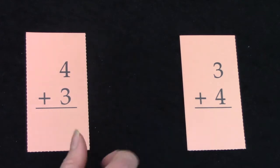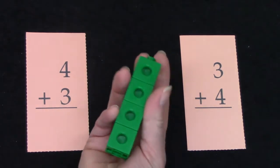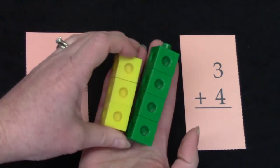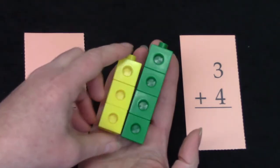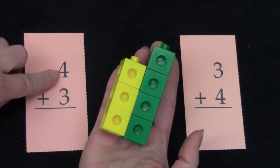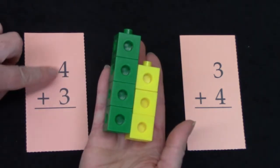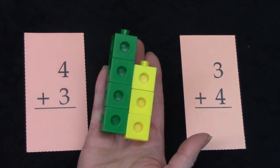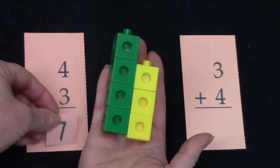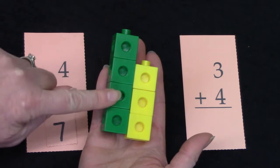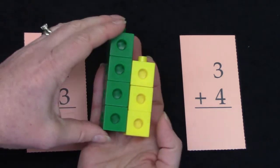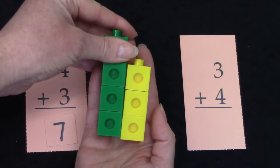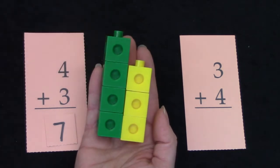These two double plus one facts are switcheroos because in both of them we are adding a 4 and we're adding a 3. On this one we add the 4 first. 4 plus 3. And 4 plus 3 is 7. 1, 2, 3, 4, 5, 6, 7. Another way to think about it would be we could do doubles. 3 plus 3 is 6 plus 1 more is 7.